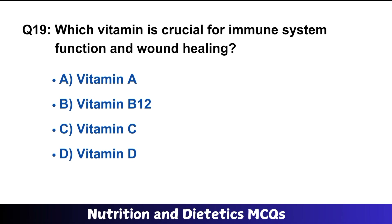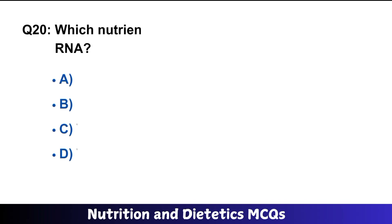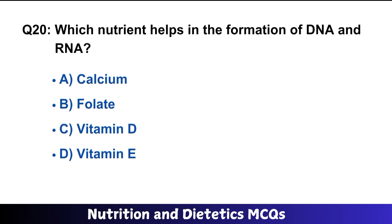Question number nineteen: which vitamin is crucial for immune system function and wound healing? C is the right option: vitamin C. Question number twenty: which nutrient helps in the formation of DNA and RNA? B is the right option: folate.